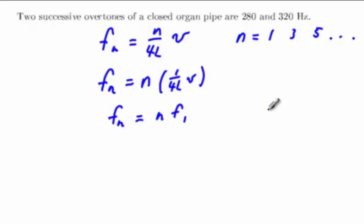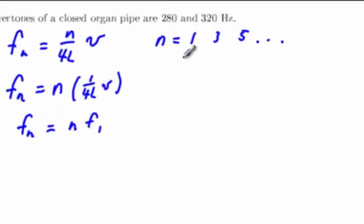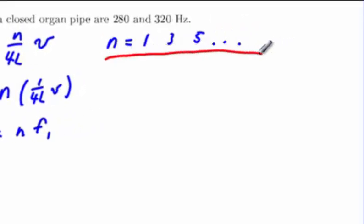Now what we know is that the 280 represents one of the n's. The 320 represents the next possible n. I don't know what either of these n's are, but I do know that since the n's only take on odd values, these n's are separated by 2.